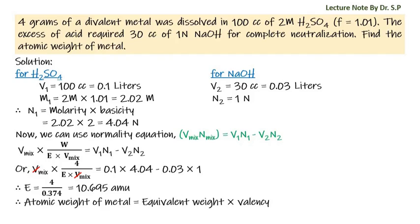Therefore the atomic weight of the metal is equal to equivalent weight into valency, that is 10.695 into 2. According to the question the metal is divalent, so valency is 2. Therefore atomic weight of metal = 21.39 amu.